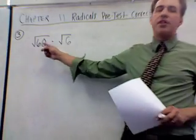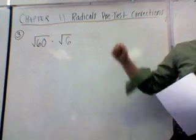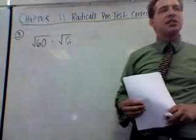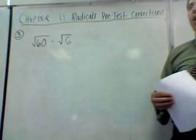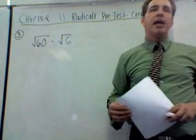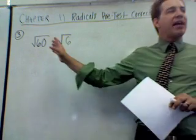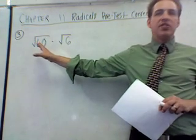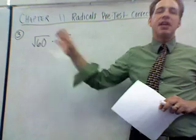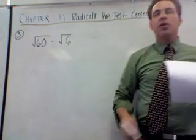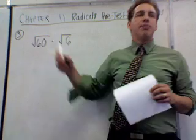This is number 3 on the Chapter 11 Radicals pre-test. This is root 60 times root 6. A lot of people, but a surprising number of people wrote root 360 and left it. That's not the name of this game. You're asked to simplify this question. Simplify means break it down. We've been saying over and over, break it down. So when we say break it down, how do you break it down?